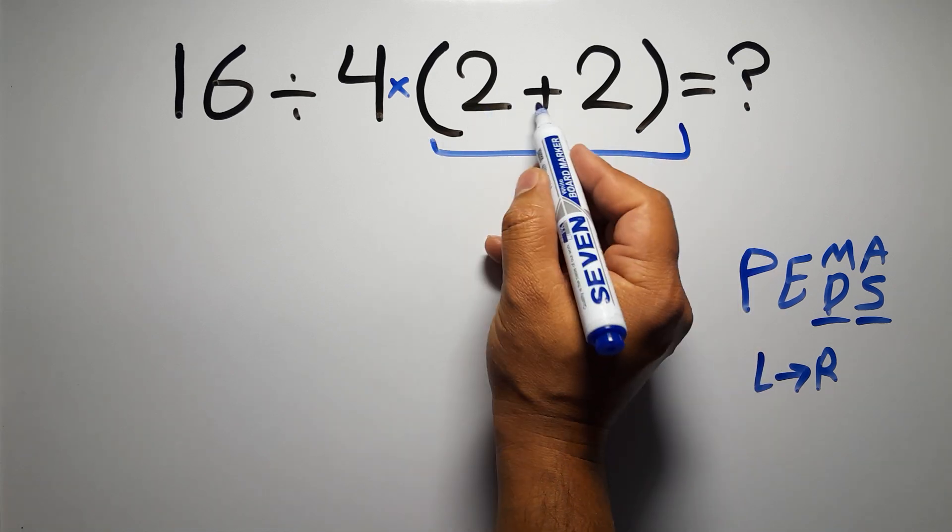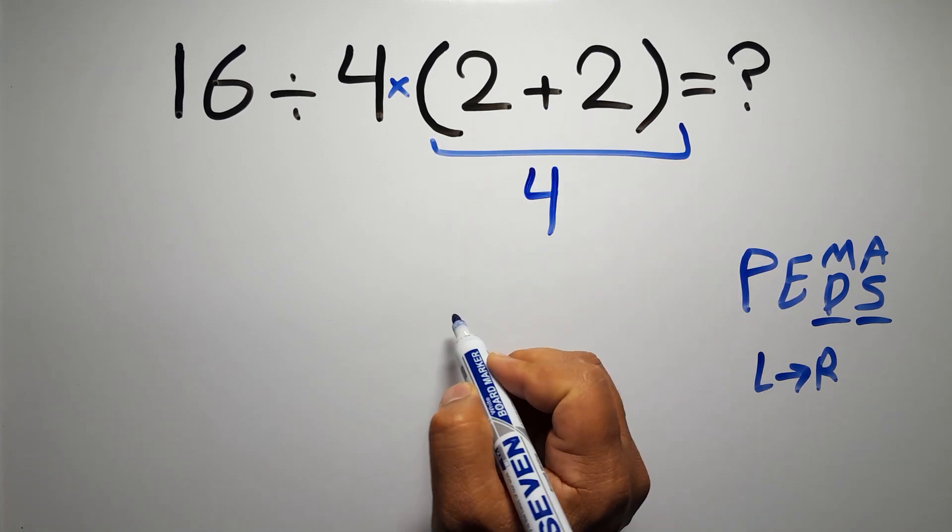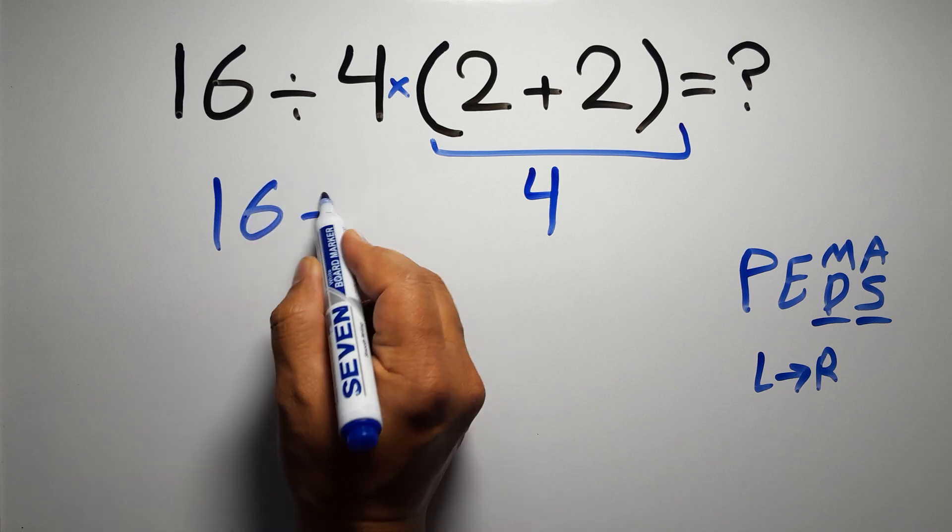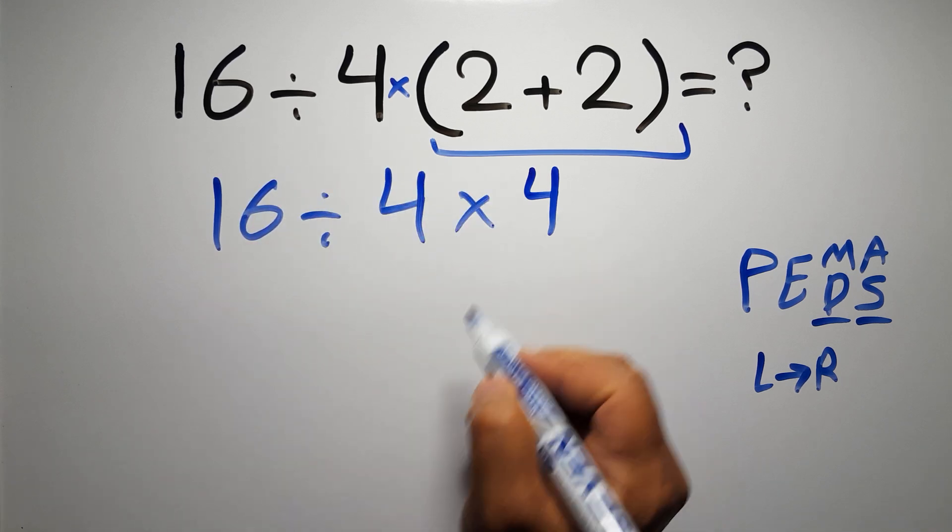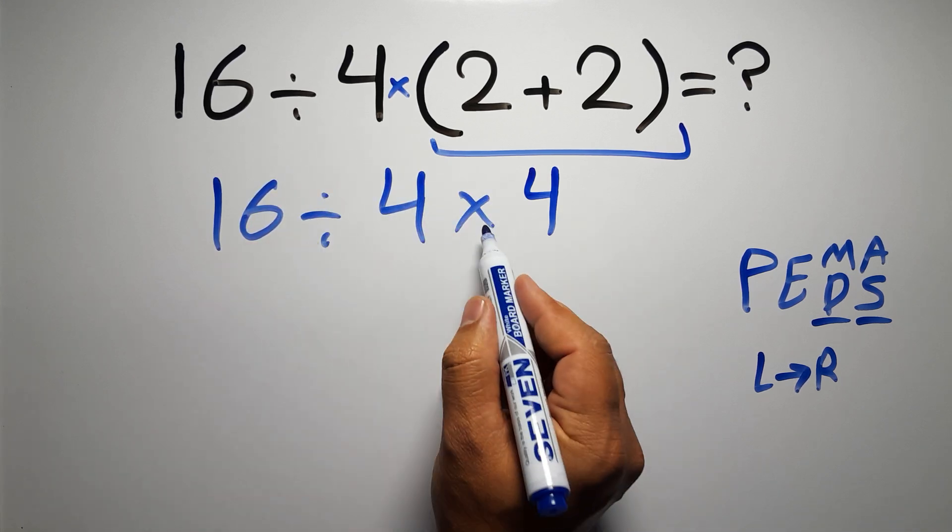Inside this parentheses, we have 2 plus 2, which gives us 4, so 16 divided by 4, then times 4. Now we have one division and one multiplication.